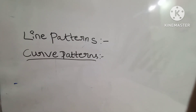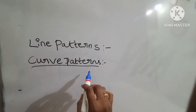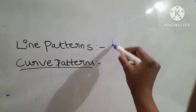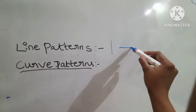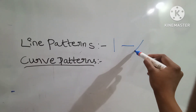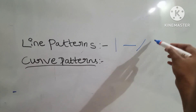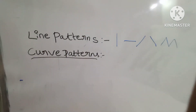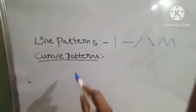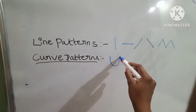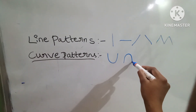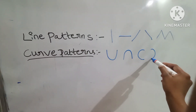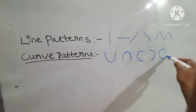Let's see together line patterns and curve patterns. Line patterns: standing line, sleeping line, right slanting line, left slanting line, zigzag lines. Curve patterns: up curve, down curve, left curve, right curve, and circle.